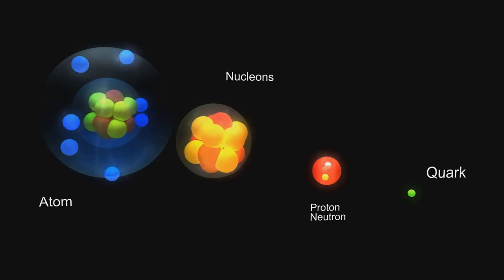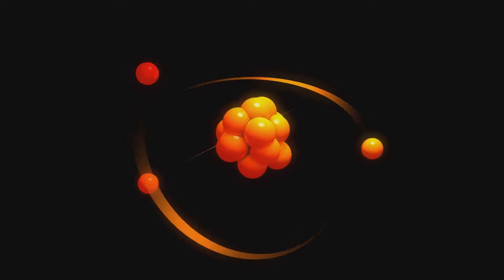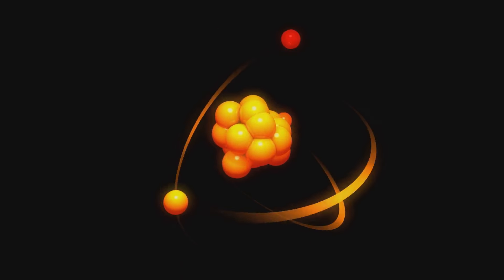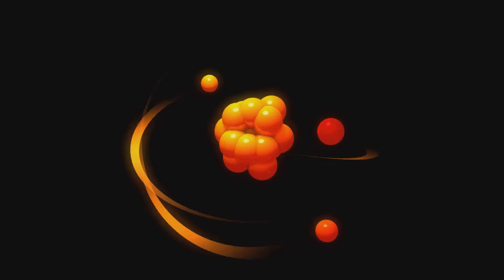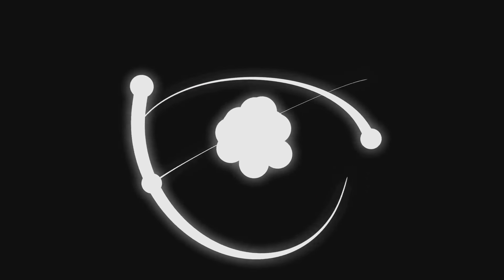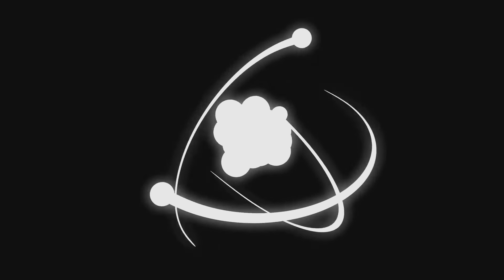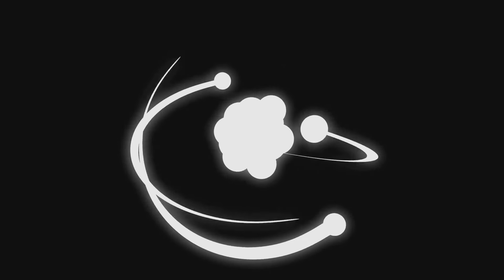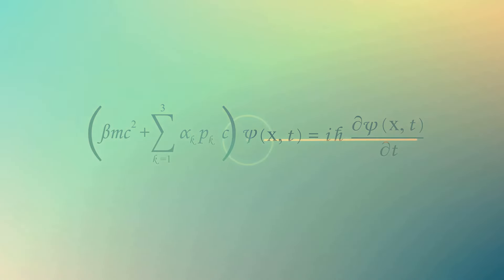This wave-particle duality leads to some remarkable phenomena. For instance, a particle doesn't have a definite position until it's observed. Instead, it exists in a state of superposition where it can be in multiple places at the same time. Think of it as a wave spread out in space. This wave, known as the wave function, describes the probability of finding the particle in different locations.